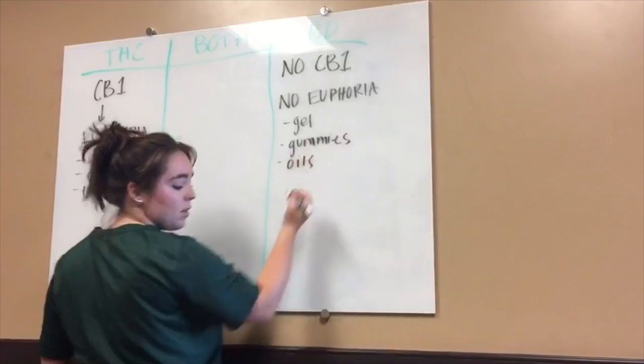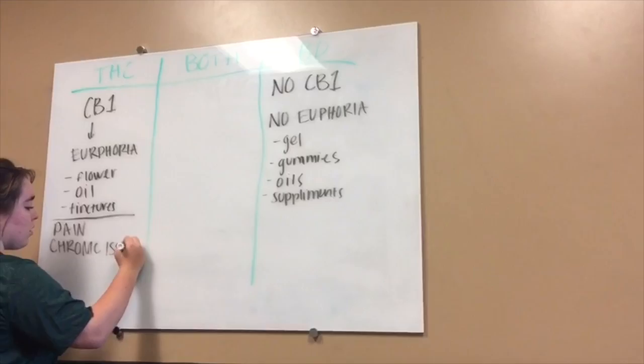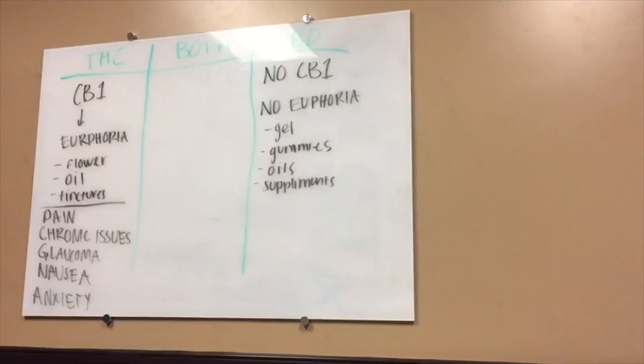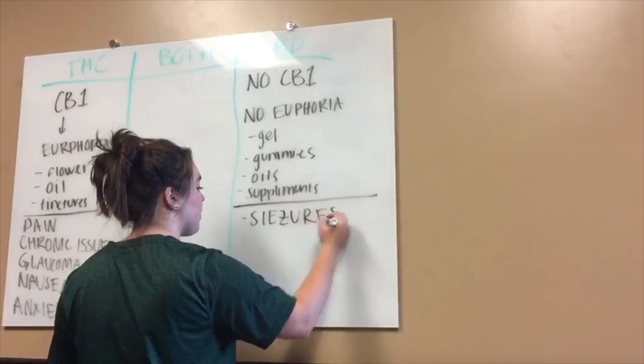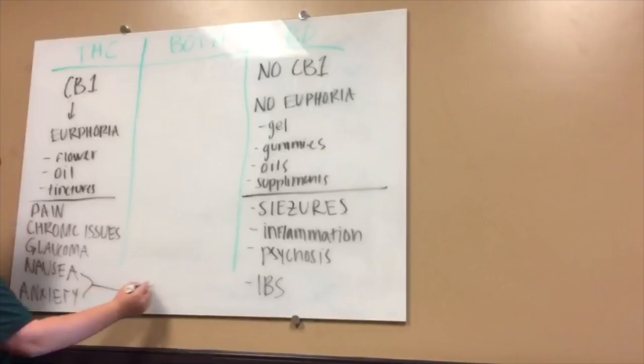However, THC helps to reduce pain, muscle spasms, glaucoma, insomnia, low appetite, nausea, and anxiety. CBD, however, helps to reduce seizures, inflammation, pain, psychosis, irritable bowel syndrome, nausea, migraines, depression, and anxiety. Nausea and anxiety are helped by both THC and CBD, and you cannot overdose on either.